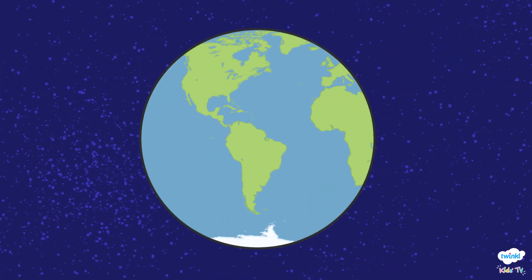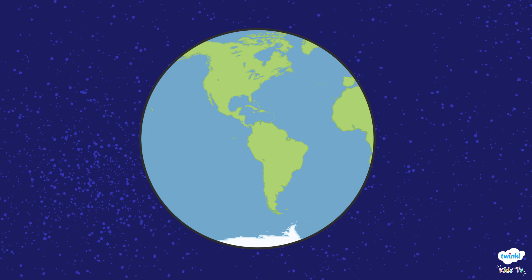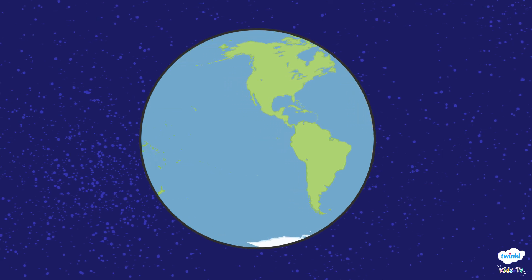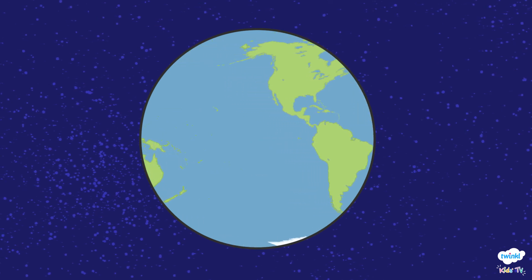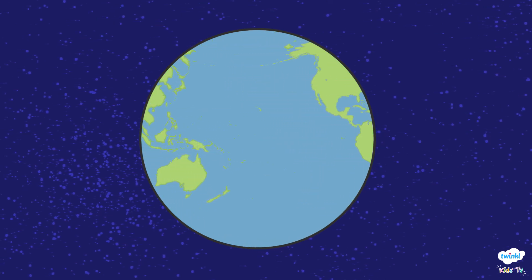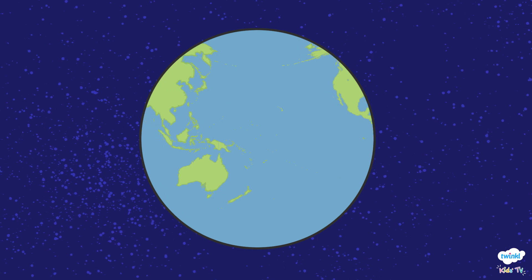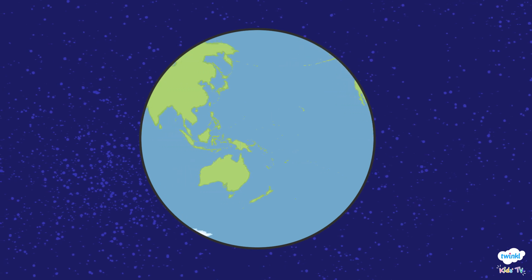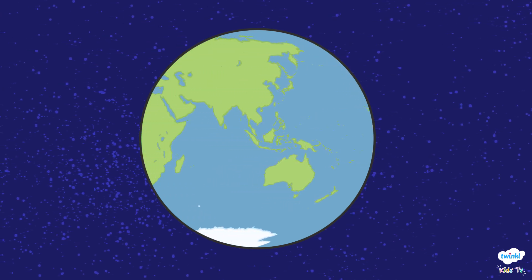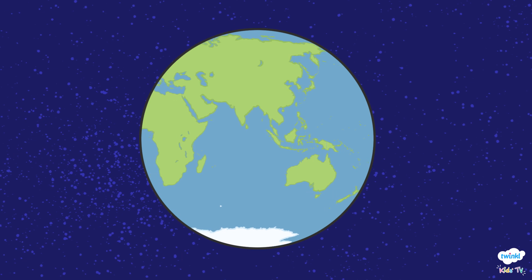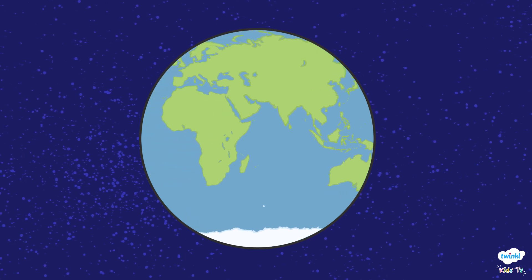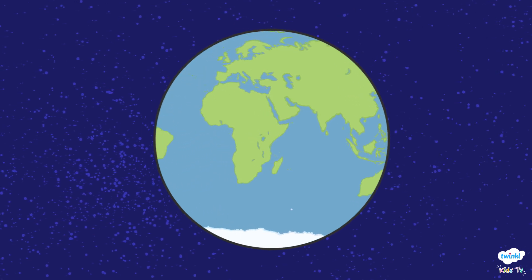Although the seasons and the different types of weather they bring affect us down here on Earth, they're actually caused by the angle of our planet. Believe it or not, Earth is actually tilted on its axis like this.